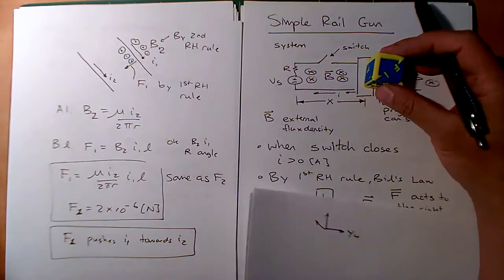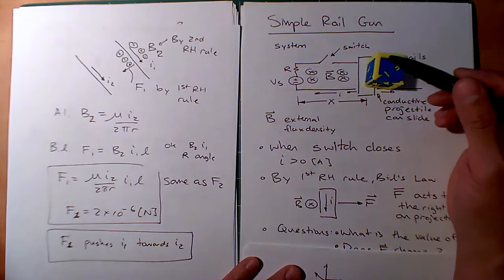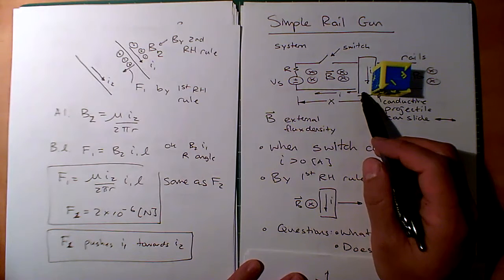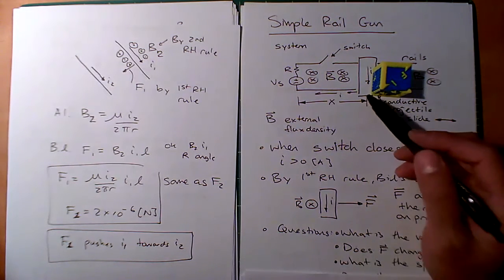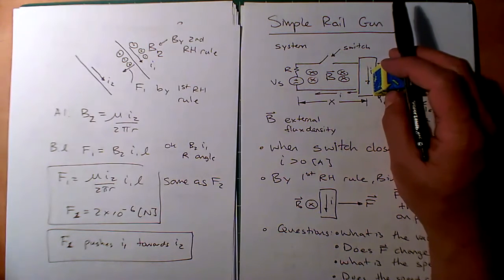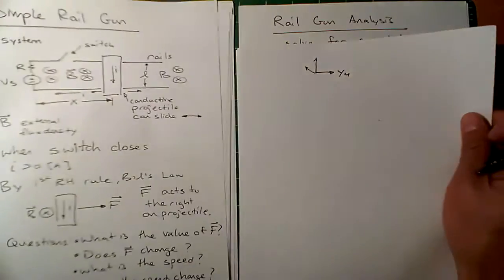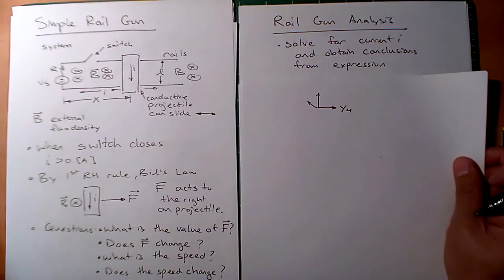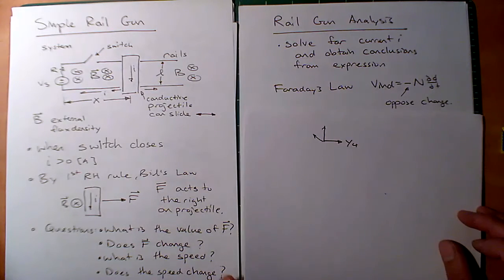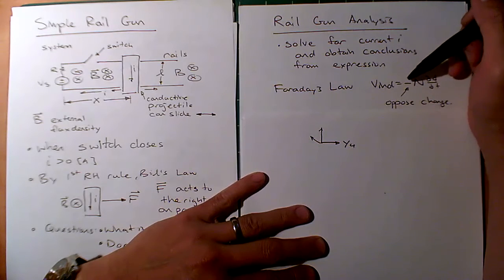Some questions: What is F? Does F change over time — does it decrease, increase, or stay constant? What is the speed, and how would we find an equation for it? Does the speed reach a maximum or keep increasing? To answer these, our strategy is to solve for the current, because from Bill's Law F = BIL, if we know the current we can find the force. We'll start with Faraday's Law: V induced equals minus N dΦ/dt. We'll be loose with the minus sign.